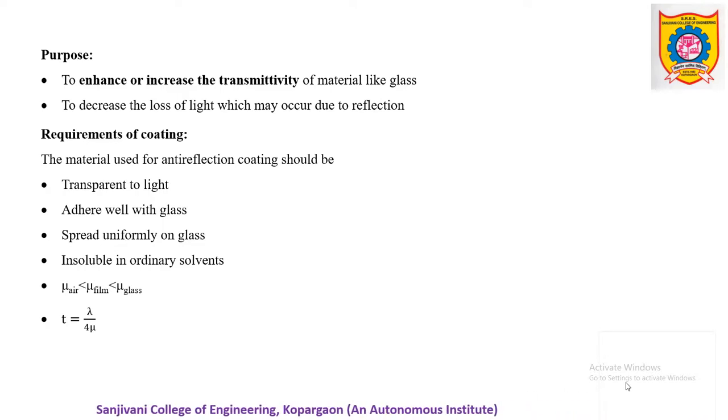These last two conditions are very important. The material which is to be used as anti-reflecting material, its refractive index should be greater than air but less than glass. Commonly used material is magnesium fluoride, which has refractive index 1.38. One more condition is required regarding the thickness. The thickness of the film should be of the order of lambda by 4 mu, where mu should be intermediate between air and glass.